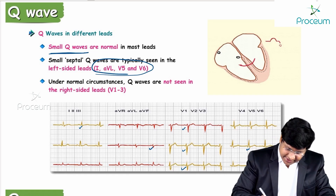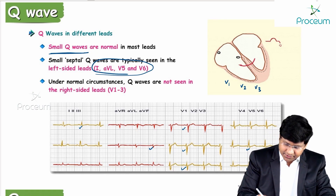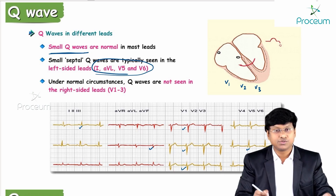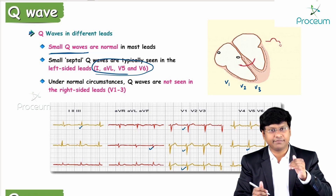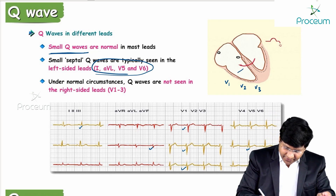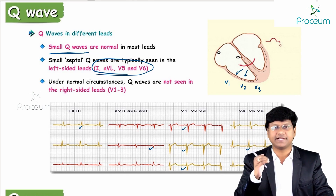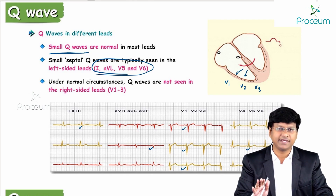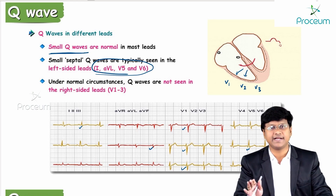In V1, V2, and V3, the depolarization is moving towards the electrode. Even though the Q wave is a negative wave and should produce a negative complex, that negative complex gets neutralized because the wave of depolarization is moving towards the electrode in V1 and V2. Therefore you will not have a Q wave in V1, V2, and V3.